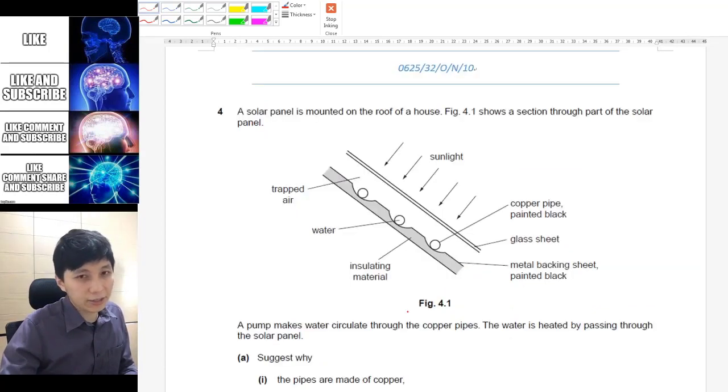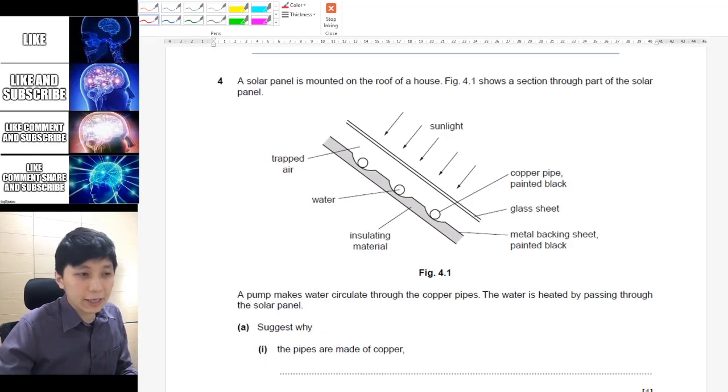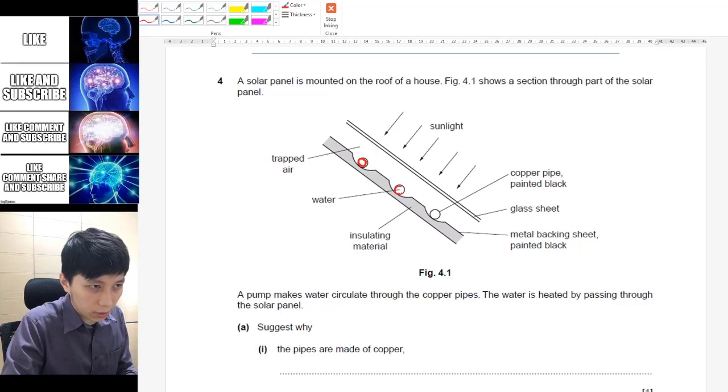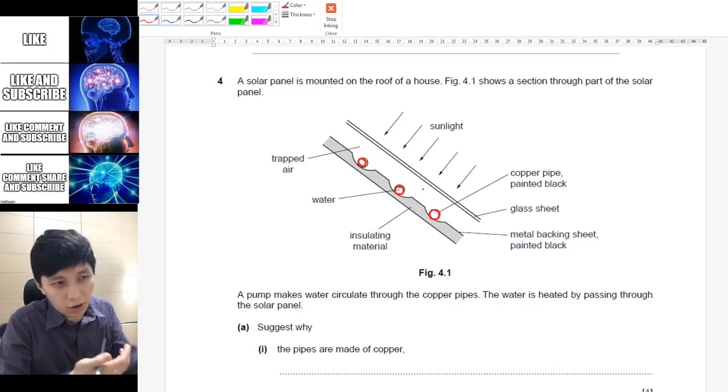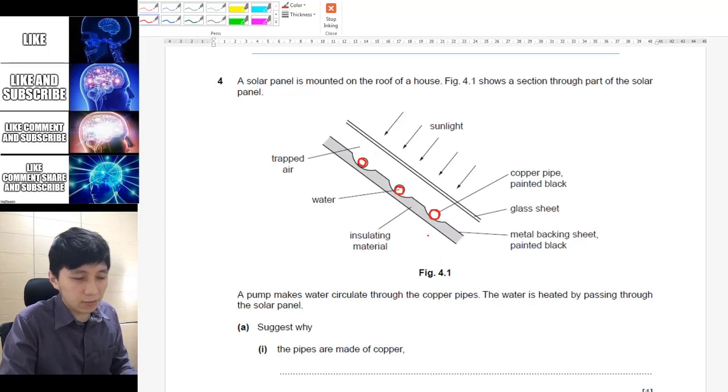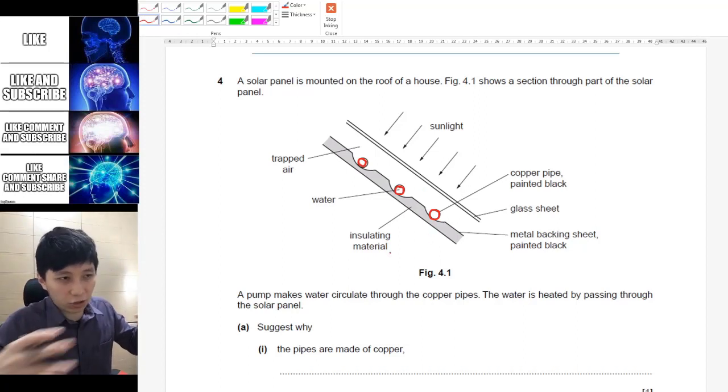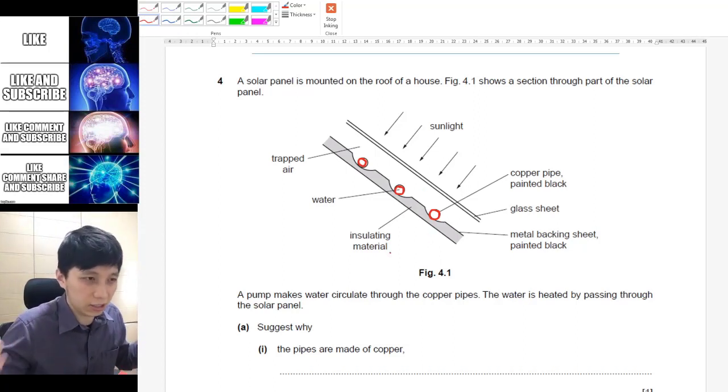On to the next page, try this yourself, pause the video now. The first question is asking you why the pipes are made of copper, and so these are the water pipes in the picture. In the past, I don't know why some students cannot understand this picture. This is a cross section of the roof, and the pipe is cylindrical, and therefore when you cut it, it is in circle shape.